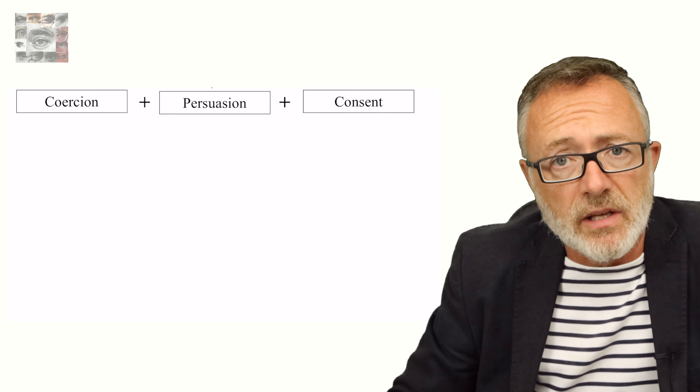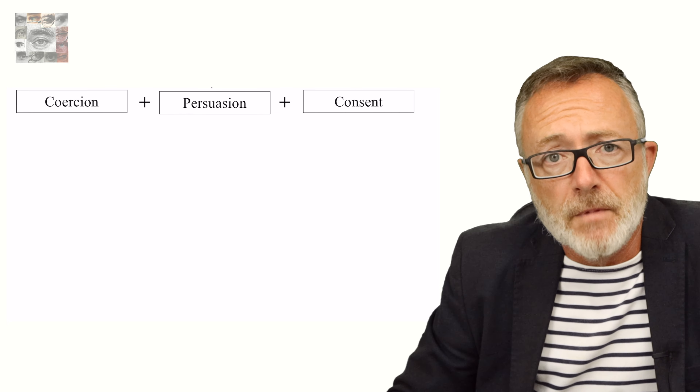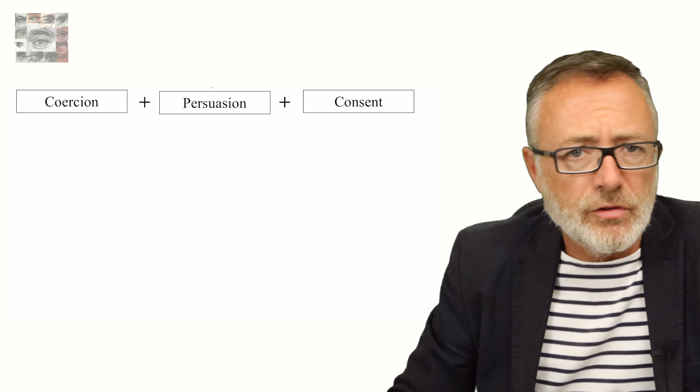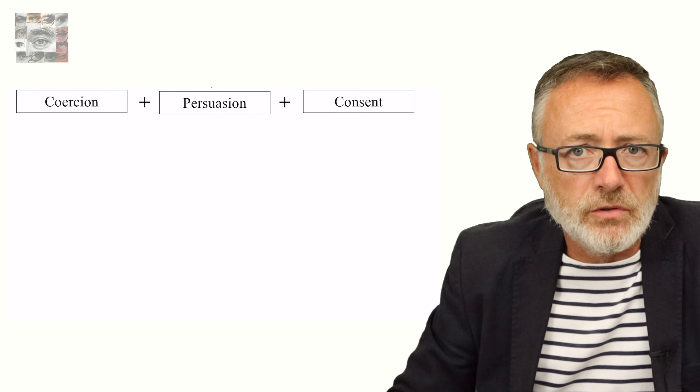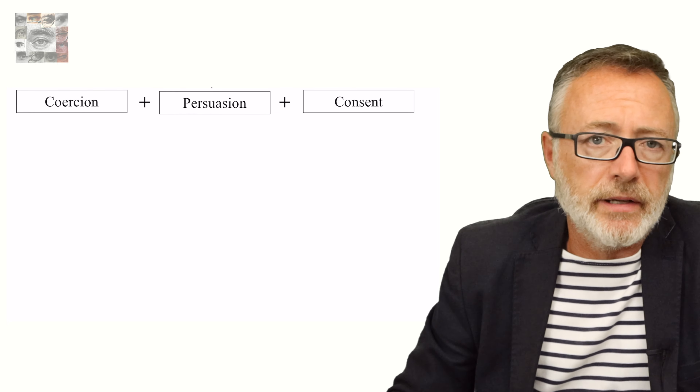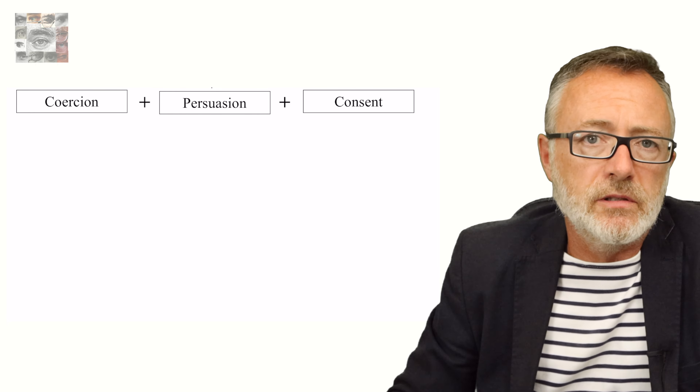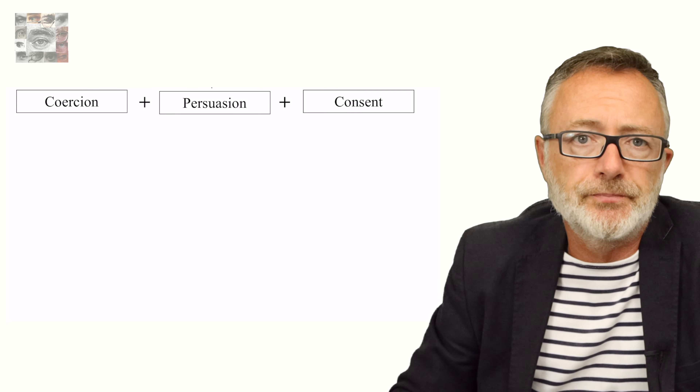The state controls the individual through three distinct mechanisms: coercion, persuasion, and consent. In this introductory lesson I want to look briefly at each of these methods.